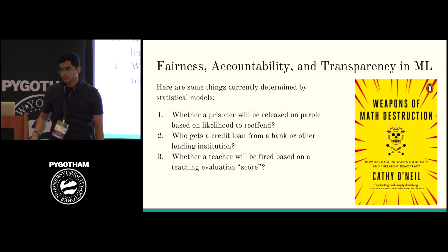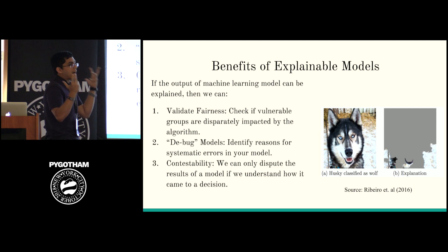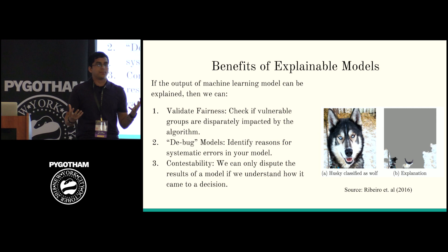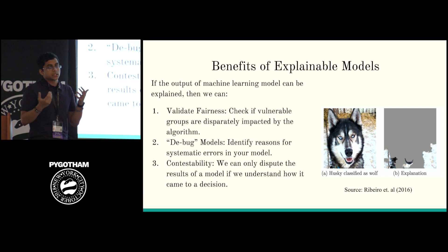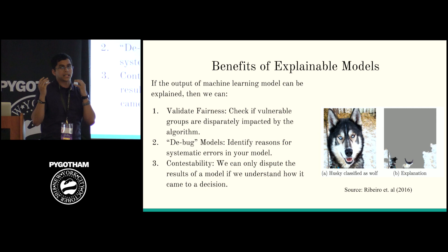So why does interpretability matter? If we have interpretable models, we can validate for fairness — we can check if disparate, vulnerable groups are adversely affected by our model. This goes back to the prison sentencing example where we can see that blacks and Hispanics are given higher prison sentences. There's a talk tomorrow called 'The Tricky Business of Not Discriminating' that will cover this topic in more depth — how do you protect vulnerable classes without inadvertently backfiring?